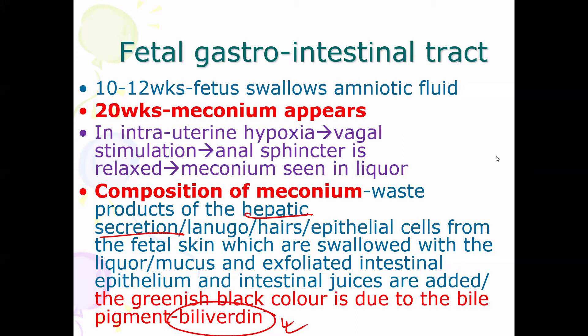Meconium contains mainly hepatic secretions. That's why it is green in color because of the pigment biliverdin. Other contents include epithelial cells, exfoliated cells present in the amniotic fluid which is swallowed by the fetus, as well as intestinal juice.